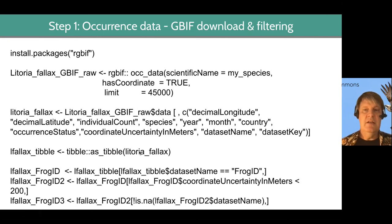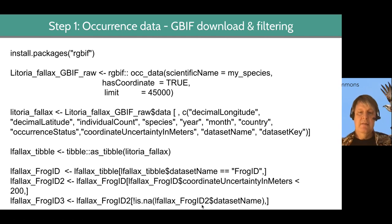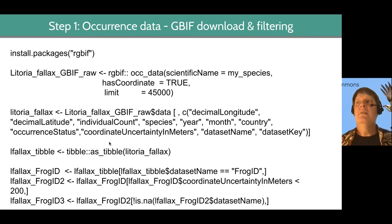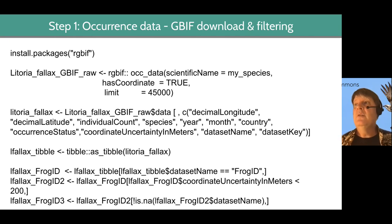We're going to turn it into a tibble — which is just a kind of data table — and then subset it so we only want the Frog ID records, increase the coordinate uncertainty to 200, and get rid of NA data in the dataset name. It's a very similar workflow to ALA. This is the way you do it in GBIF, and there's another use case that walks you through a similar workflow in more detail with GBIF.